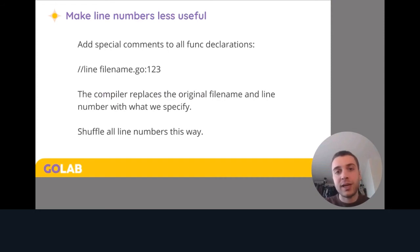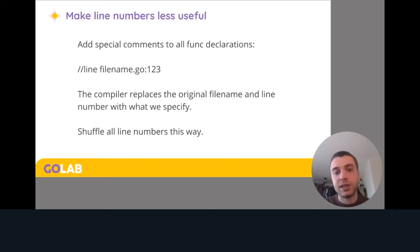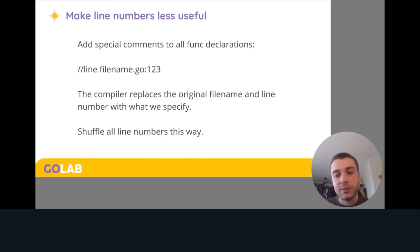We could also replace file names — when we write copies of the input source files, we can use a temporary directory and name them something like f1, f2, f3, so you cannot infer context from the original file names like client.go or server.go. We could also make line numbers less useful using a special comment the compiler understands called '//line'. What that does is tell the compiler to forget the current line number and file name and replace them with what you specify. So we can add those comments before each function declaration to shuffle line numbers without physically moving functions.